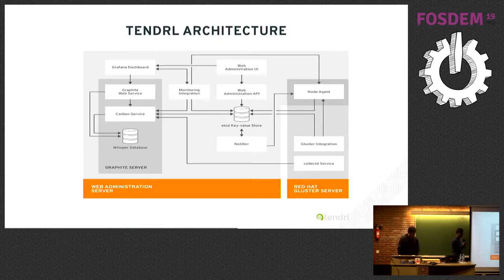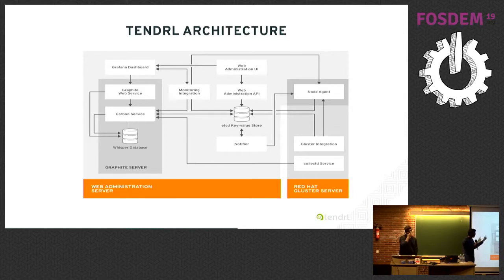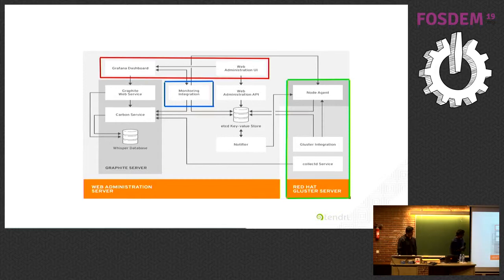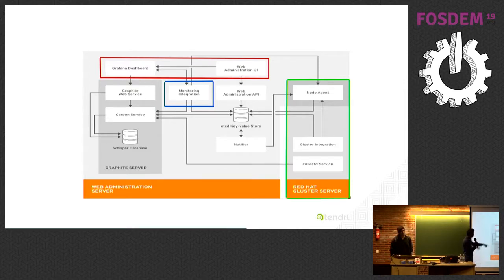This is the Tendril architecture. We split the architecture into two different parts: one is the services running on the server side, and the services running on the storage node side. Based on these services, we classified them into three major layers. The layer highlighted in green is called the storage node layer, the layer highlighted in blue is called the middle layer, and the layer highlighted in red is called the visualization layer. We will discuss each layer in detail.